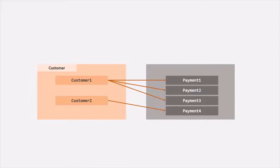Why? Because a customer is not going to have a lot of payment methods. A customer can have maximum 10 or 15 payment methods — 10 or 15 cards. He is not going to add 100 or 1000 cards. When creating a one-to-many relation using embedded documents, we need to keep in mind that the overall document size cannot exceed 16 MB.